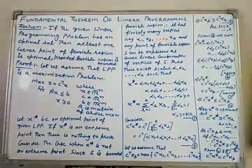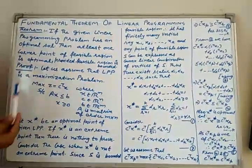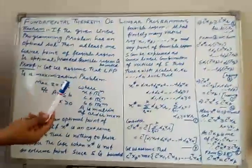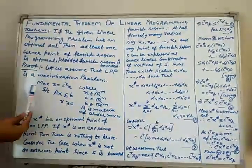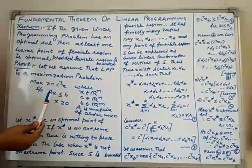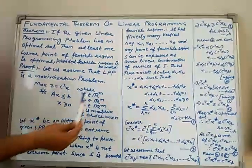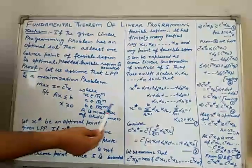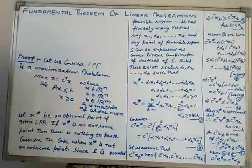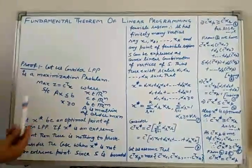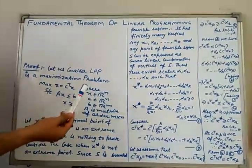Now let us consider the linear programming problem as a maximization problem. We can prove the result also for the minimization case, but here we take that the LPP is a maximization problem: Maximize Z = C^T X, subject to AX ≤ B, along with non-negativity restrictions, where X is an n-dimensional vector, C is an n-dimensional vector, B is an m-dimensional vector, and A is a coefficient matrix of order m×n. We have to prove that at least one corner point of the feasible region of this LPP is an optimal point.